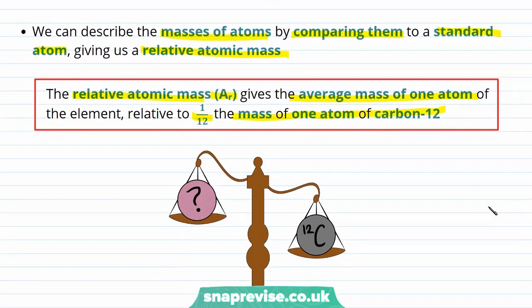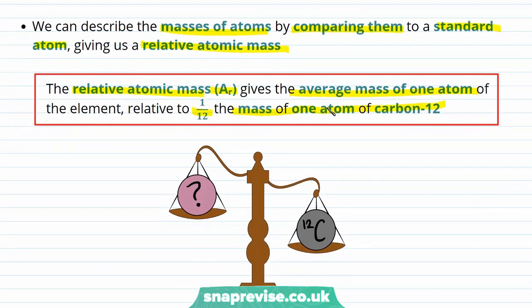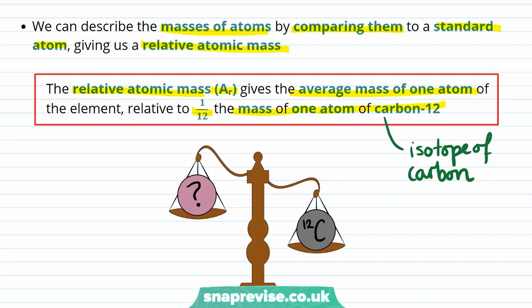What this means is that we use one atom of carbon-12 as our standard atom, where carbon-12 is just an isotope of carbon — specifically the most commonly occurring isotope of carbon — that contains 12 neutrons, and therefore has a nuclear symbol of ¹²₆C. This atom is chosen as a standard atom as it's very commonly occurring, and also because it allows chemists all over the world to compare the masses of atoms to one standard.